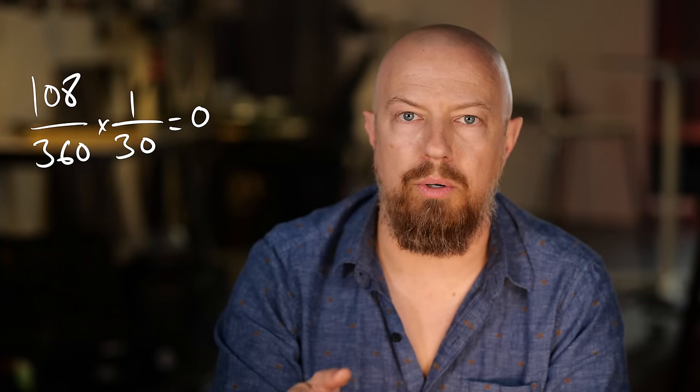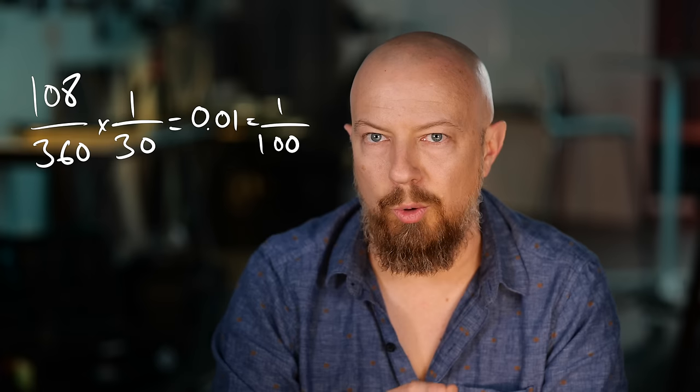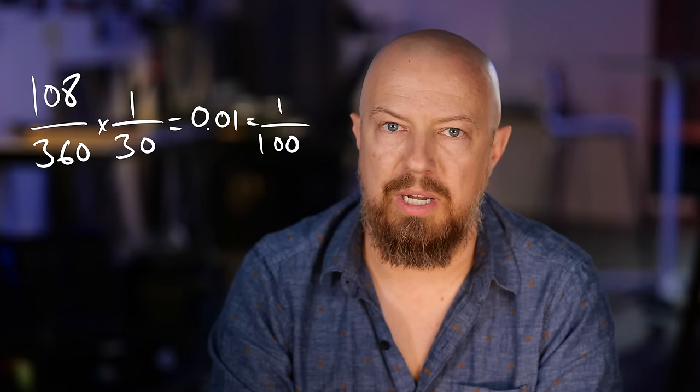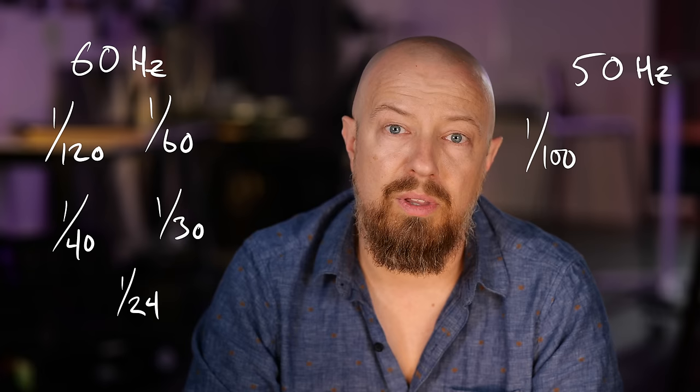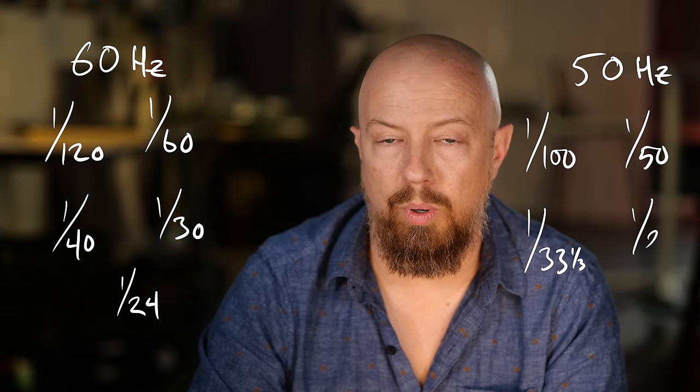Now how about converting those shutter angles to shutter speeds? Ironically, as much as I appreciate shooting in shutter angle, when it comes to avoiding flicker it's actually a lot easier to just work in shutter speed, because no matter the frame rate, the math always reduces back to the same few shutter speeds. For 60Hz power sources, those numbers are 1/120th, 1/60th, 1/40th, 1/30th, 1/25th, and 1/24th of a second. For 50Hz sources, they're 1/100th, 1/50th, 1/33⅓rd, 1/25th, and 1/20th. How do we arrive there? 120 peaks divided by 1 is 120, by 2 is 60, by 3 is 40, by 4 is 30, by 5 is 24. And 100 divided by 1 is 100, by 2 is 50, by 3 is 33⅓, by 4 is 25.